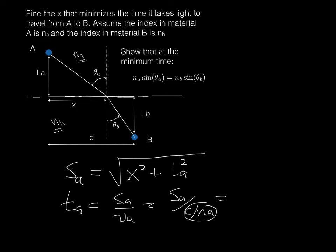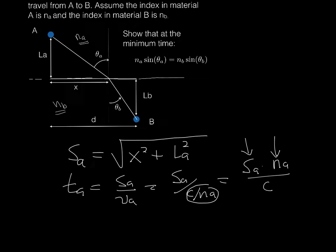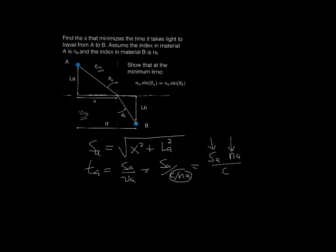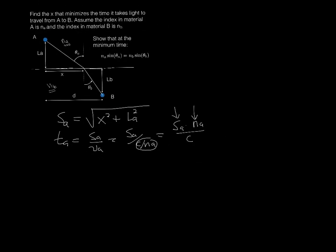c over n_a is in the denominator. So that's going to be s_a n_a divided by c. So the time in medium A is the product of two factors, the actual physical distance in medium A times the index in medium A. This is a common product in this business, and in fact, it has a name. It's called the optical length. I'll give that a name or optical distance in that medium.